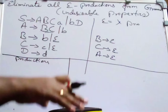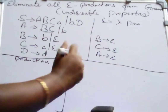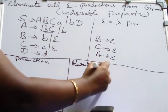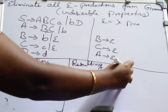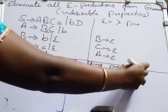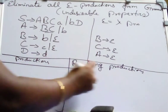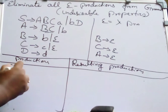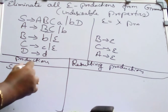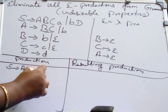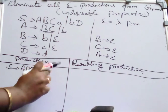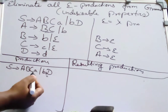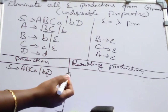So here are the resulting productions after removing the nullable productions. Make two columns. Take the first production: S derives A, B, C, or A or B, D. Now what we have to do is apply the nullable variables to A, B, C and write the respective productions.